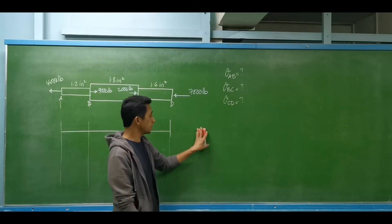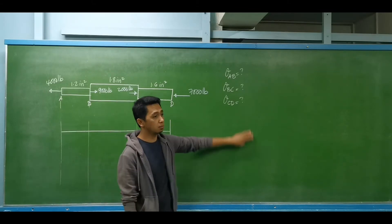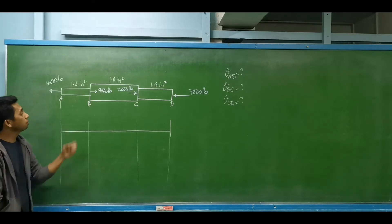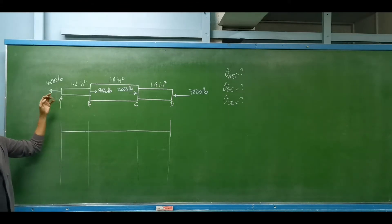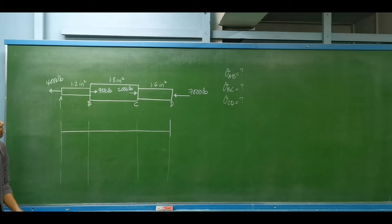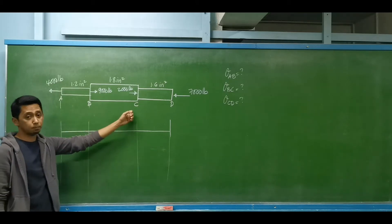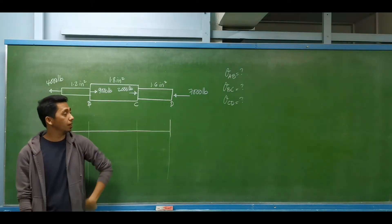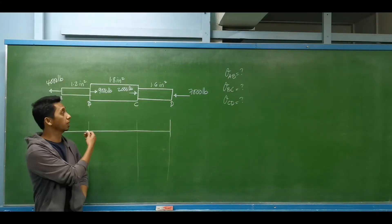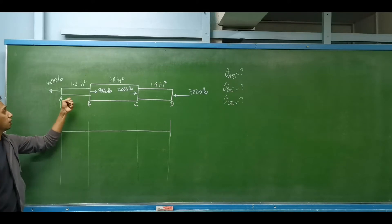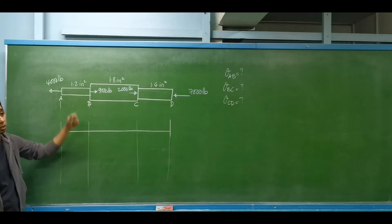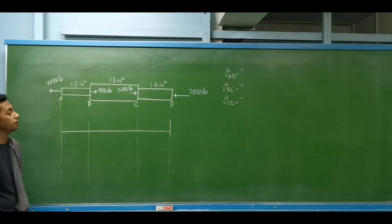We have an example for normal stress with three segments. At point A, we have a force of 4,000 pounds to the left. At point B, 9,000 pounds to the right. At point C, 2,000 pounds to the right. At point D, 7,000 pounds to the left. There are three different segments since we have three different cross-sectional areas.